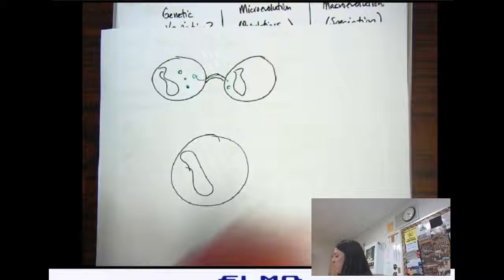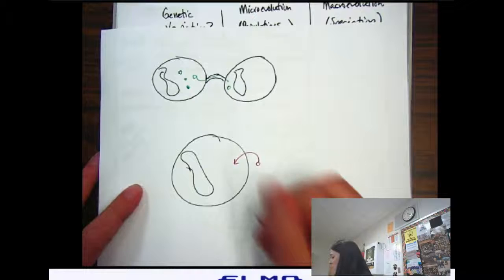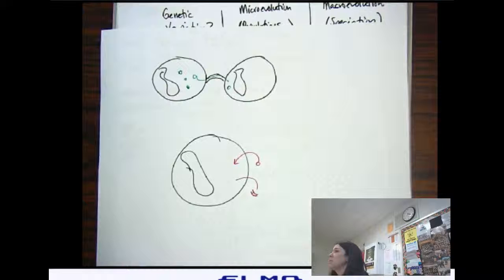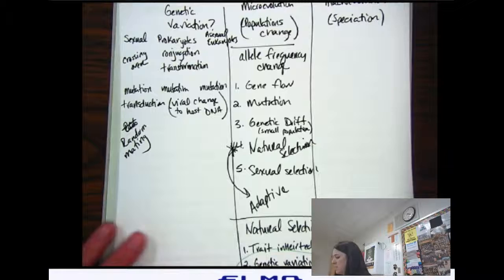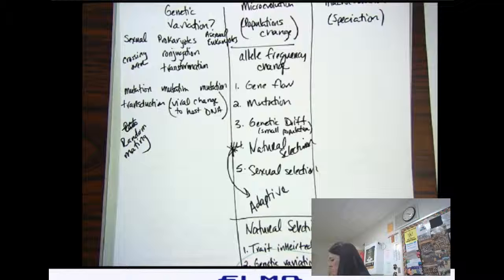So it can come from the outside. It could be a plasmid from outside. Or it could just be like some lone DNA from the outside.